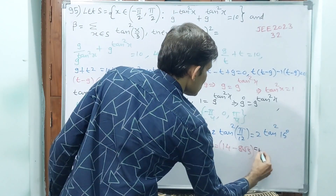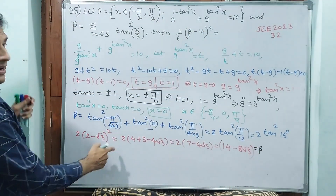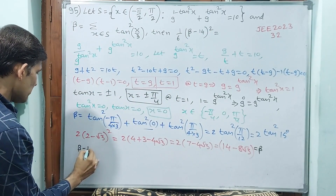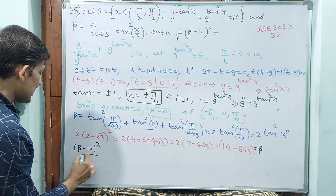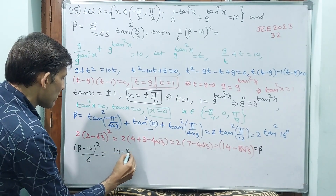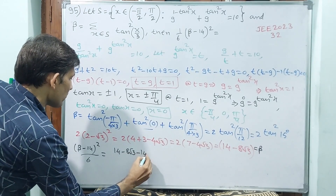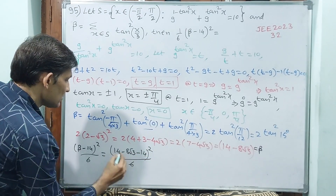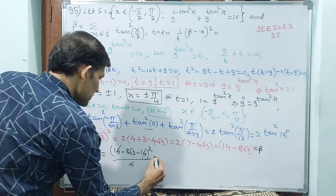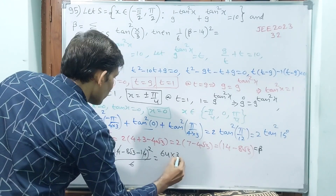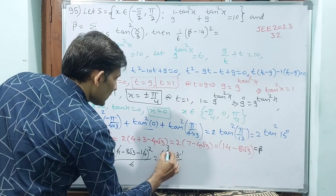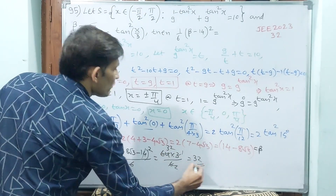Write down beta. Now go back — the question asks for (beta minus 14) whole square by 6. Beta minus 14 equals (14 minus 8 root 3) minus 14, which is minus 8 root 3. So the expression becomes (minus 8 root 3) squared divided by 6, which is 64 times 3 divided by 6, giving 192 divided by 6 equals 32. So 32 is your answer.